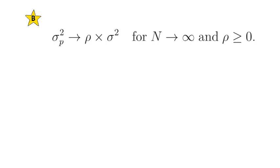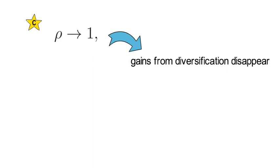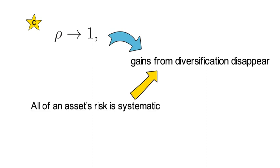Portfolio risk falls if the correlation coefficient rho falls. In fact, adding an asset with zero correlation to an existing well-diversified portfolio does not change the volatility of that portfolio. Portfolio risk even falls if that new asset has a negative correlation with the well-diversified portfolio. And point C: as the correlation approaches 1, gains from diversification disappear, and such a setting arises if all of an asset's risk is systematic.